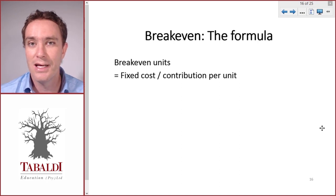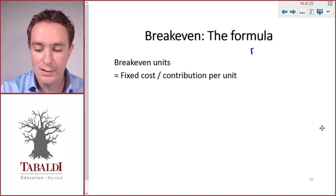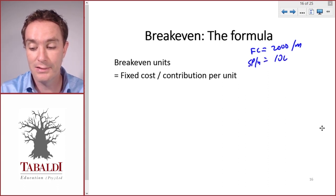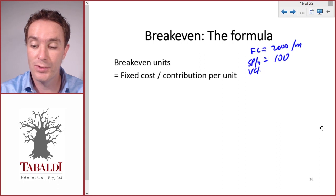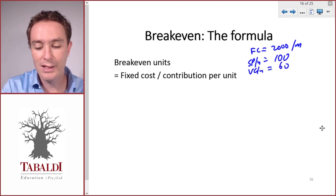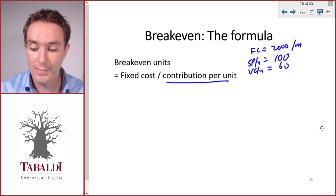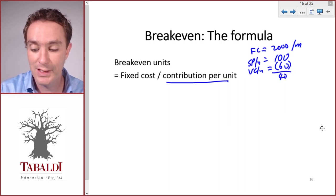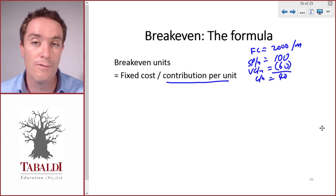The formula for breakeven is fixed cost divided by contribution per unit. Assume our fixed costs are 2,000 per month, we've got a selling price per unit of 100 and variable cost per unit of 60. We can calculate our contribution per unit by saying selling price per unit of 100 less variable cost per unit of 60, and that gives us a contribution per unit of 40.